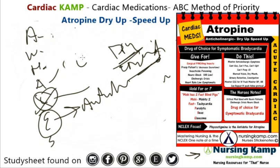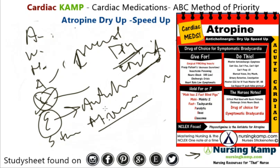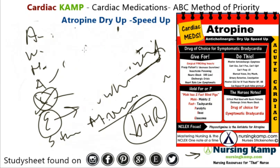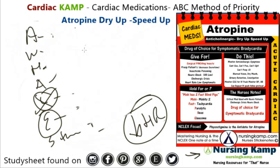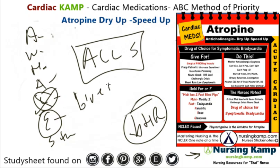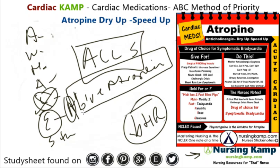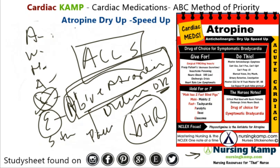What stands out: atropine is given for symptomatic bradycardia — the key word is symptomatic. If a patient is symptomatic and bradycardic, we give this medication — it's part of the ACLS algorithm. For NCLEX questions, if you have an order for atropine and the patient has symptomatic bradycardia, as long as the medication is ordered and appropriate, give it before electricity — before pacing the patient — because we always give a medication before we shock somebody.